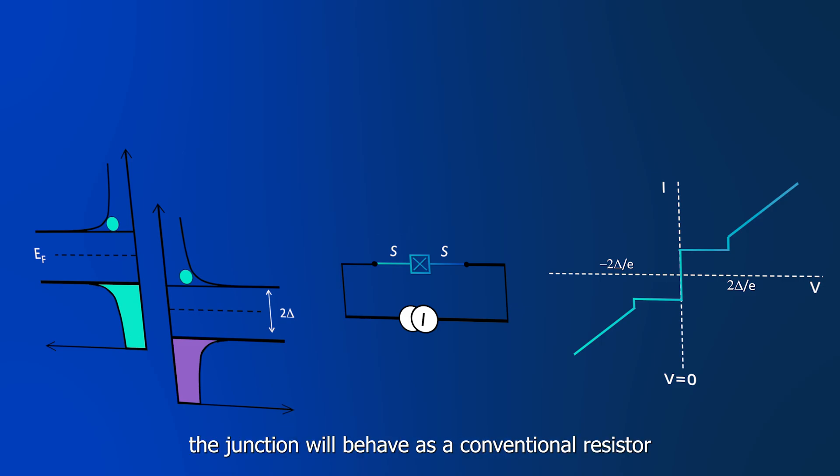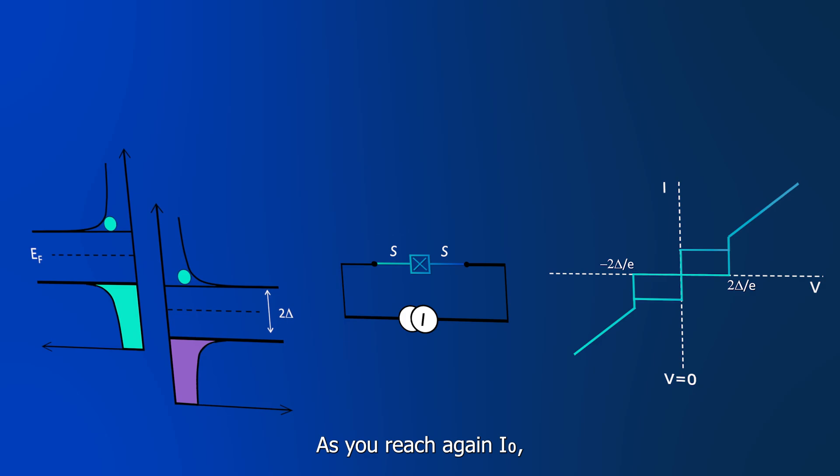From this moment on, the junction will behave as a conventional resistor, with slope given by its normal state resistance. Now, something remarkable happens when you decrease the current from the dissipative state.